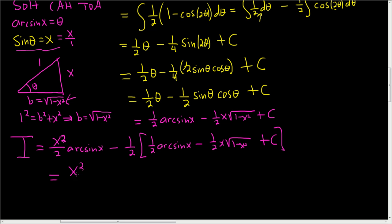So this is equal to x squared over 2 arc sine x minus, let's see, 1 half times 1 half is 1 fourth arc sine x. And then here it's a plus. And so it's plus 1 fourth x square root 1 minus x squared. Here we're going to get negative 1 half c. Let's just call it k. So this is plus k.